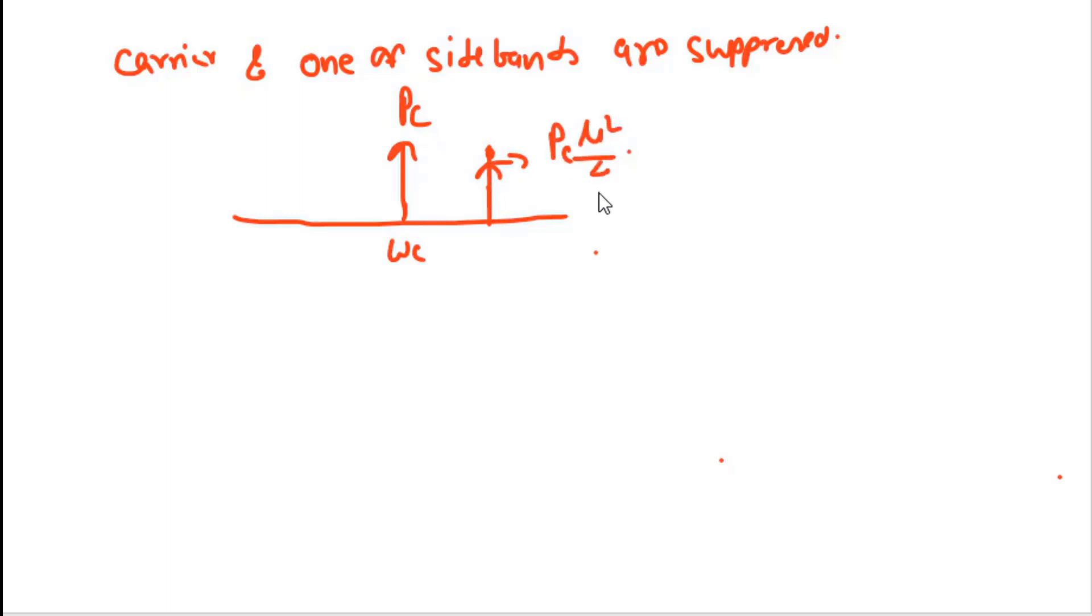In the given question, the carrier and one of the sidebands are suppressed. In this frequency spectrum, you have the carrier at ωc with power Pc, the upper sideband with power Pc μ²/4, and the lower sideband at ωc - ωm with power Pc μ²/4.